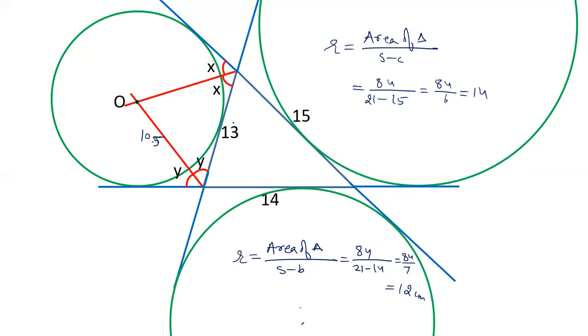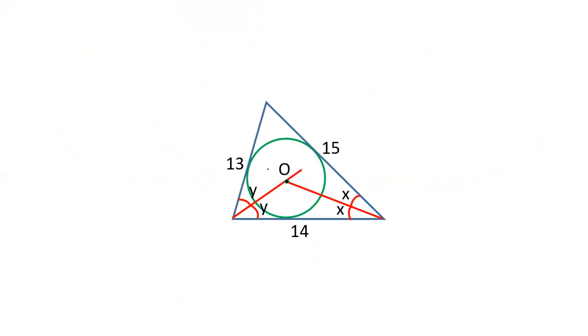And there is one more circle which touches all the 3 sides but that circle touches the 3 sides internally. And this is known as incircle. And the radius of this incircle is area of triangle upon S. Area of triangle we have calculated as 84 and S is 21. So this radius is 4 cm.